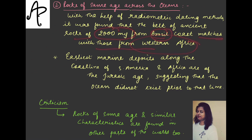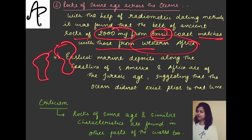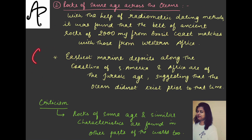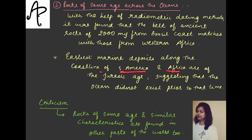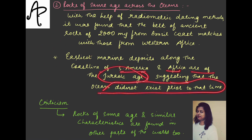Brazil is in South America. So rocks found from Brazil and rocks found from Africa had similar characteristics — there were matchings. Also, the earlier marine deposits along the coastline of South America and Africa are even of the same age — Jurassic age — and they suggest that the ocean did not exist prior to that time.